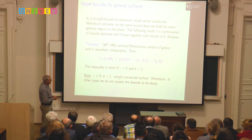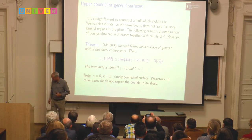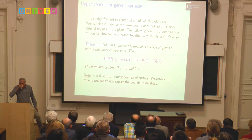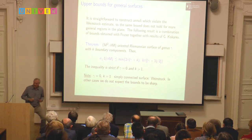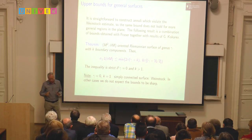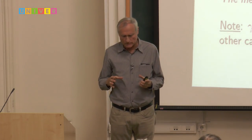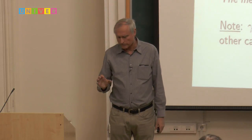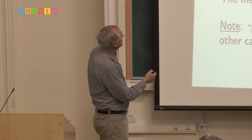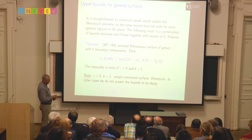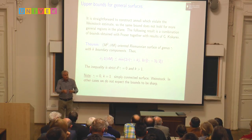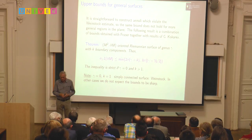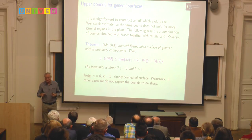On the other hand, this is a very special argument that works only for the disk. For annuli, the Weinstock theorem is not true. If you take the disk and remove a small disk in the center, a small calculation shows that if the central disk is small enough, the inequality is violated. So it's not true that the disk maximizes over all domains.